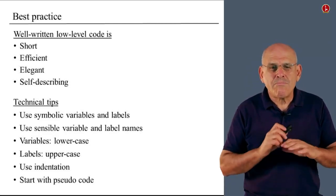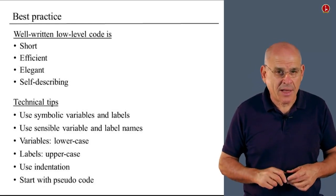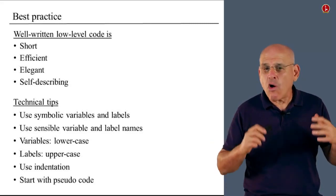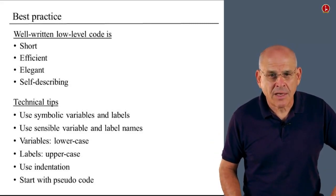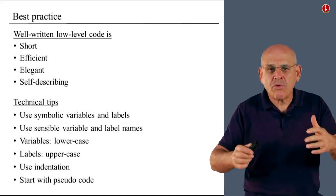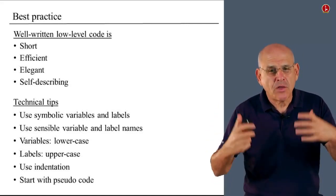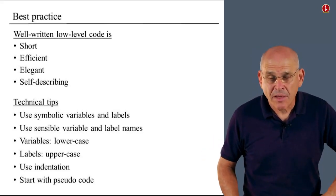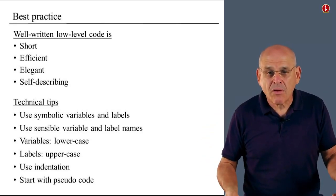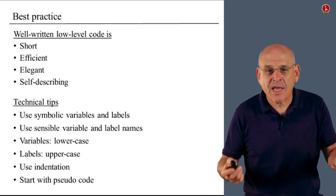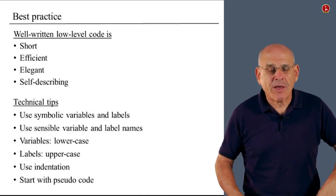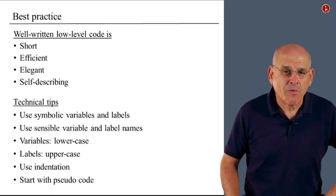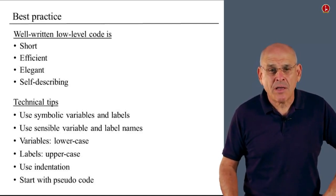Now, here are some very important technical tips that will make your life easier. First of all, you must use symbolic variables and labels. Otherwise, your programs will be helplessly and hopelessly complex and cryptic. So if you want to go to somewhere in your program, use a label. If you want to store something repetitively, make up a variable name. When you're done writing the program, look at it and make sure that you don't see any actual addresses there. You have to make sure that everything is symbolic. This is one very important virtue of well-written machine language programs.